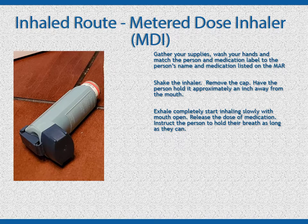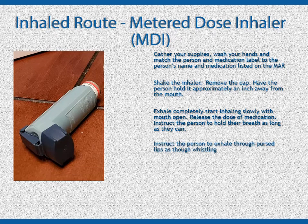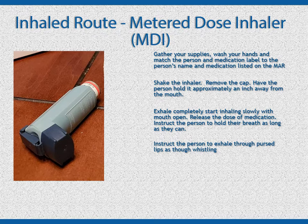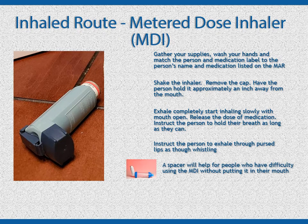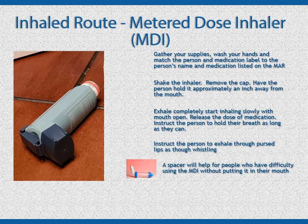Depress the canister only one time. Have the person hold their breath for a count of ten or as long as possible. Instruct the person to exhale through pursed lips as though whistling. This technique will produce back pressure that keeps the bronchioles open, thereby increasing the absorption and diffusion of the medication. If the person is not coordinated enough to use the inhaler as described, they may need a spacer. This allows the aerosol to disperse in the chamber; the person can then exhale and inhale the medication from the spacer.